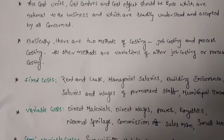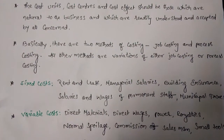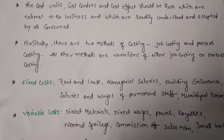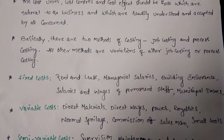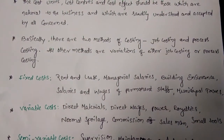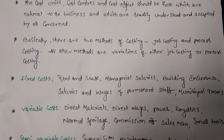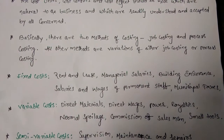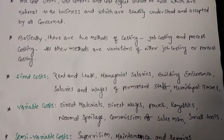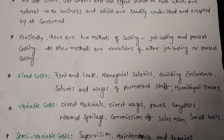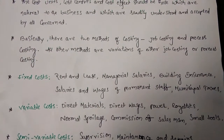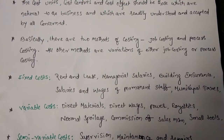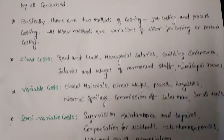Next one: basically there are two methods of costing — one is job costing and another one is process costing. All other methods are variations of either job costing or process costing.